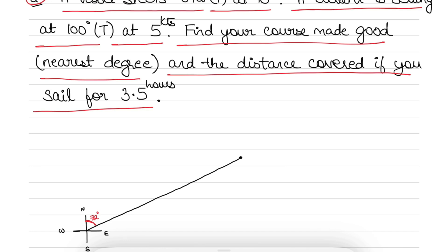The course made good remains the same whether you draw the triangle for one hour or three and a half hours — you don't multiply it. But the distance found from the one-hour triangle must be multiplied by three and a half to get the total distance covered. The vessel is drawing a course of 072° measured clockwise from north, doing 10 knots per hour.